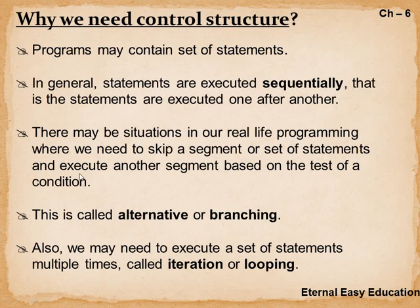There may be situations in real-life programming where we need to skip a segment or set of statements and execute another segment based on the test of a condition. For example, if we are getting a student's age and the age is less than 18, we say 'not eligible for voting.' If age is more than 18, the person is eligible for voting. This is called an alternative or branching statement, because based on the condition, the flow takes a diversion — that is, branching.